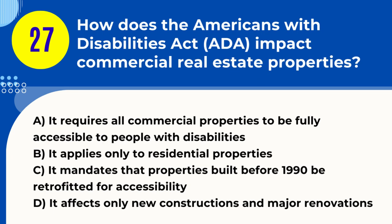Question 27. How does the Americans with Disabilities Act, ADA, impact commercial real estate properties? A. It requires all commercial properties to be fully accessible to people with disabilities. B. It applies only to residential properties. C. It mandates that properties built before 1990 be retrofitted for accessibility. D. It affects only new constructions and major renovations. Answer: A. It requires all commercial properties to be fully accessible to people with disabilities. Explanation. The ADA impacts commercial real estate by requiring properties to be accessible to people with disabilities, including providing reasonable accommodations and ensuring accessibility in public and commercial spaces.